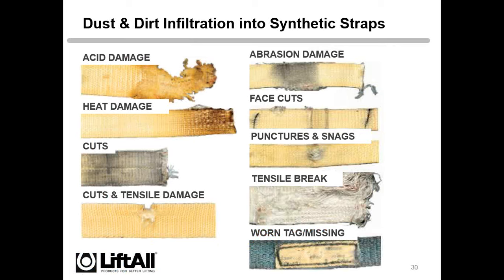Working load limits — some of you may have heard the term aggregate working load limit. It's used to figure out how many tie-downs you need for a particular load. Add together 100% of the working load limit of each end section attached to an anchor point, and 50% of the working load of each end section attached to the cargo. Example: four tie-downs at 5,000 pounds apiece give 20,000 pounds aggregate. To secure a 40,000-pound load, you would require four tie-downs with a working load limit of at least 5,000 pounds each.